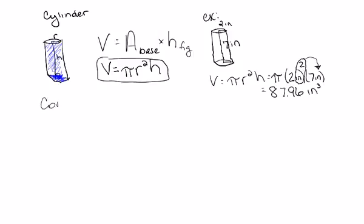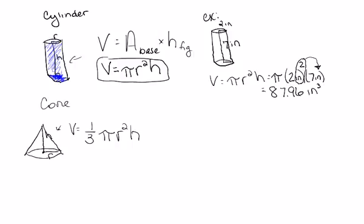Next up is the cone. The cone had some similarities to the cylinder because they both have circular bases. It turns out if we look at the volume formula for the cylinder — pi r squared h — the volume of the cone is exactly one-third that. In other words, if this cylinder and this cone had the exact same height and radius, then I would have to take this cone and fill it up three times — fill it up once, dump it into the cylinder, fill it up a second time, dump it into the cylinder, fill it up a third time, dump it in the cylinder, and that's when the cylinder would be filled. So the volume of the cone is exactly one-third the volume of the related cylinder.